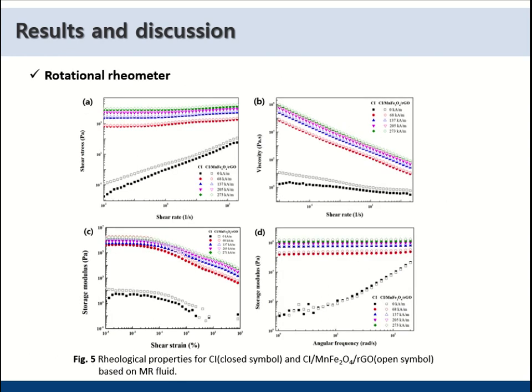Figure 5 is the rheological properties of CI and CI/MnFe2O4/rGO. A and B represent the graph of shear stress based on the shear rate under various magnetic field strengths and viscosity based on shear rate, respectively.